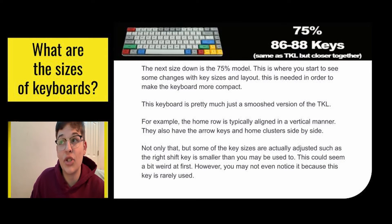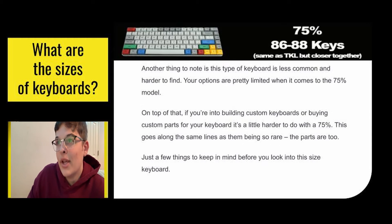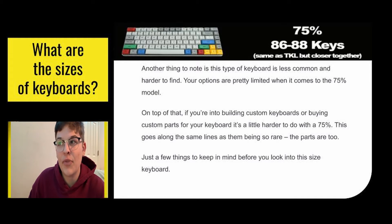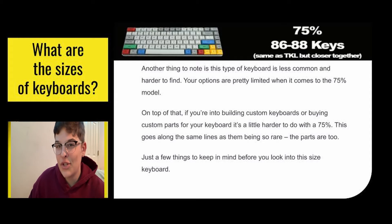Next is the 75%. This is when there are some changes with the key sizes and layout, needed to make the keyboard more compact — it's pretty much just a squished version of the TKL. For example, the home row is aligned in a vertical manner, and they also have the arrow keys and home clusters side by side. Some key sizes are actually adjusted, such as the right shift key being smaller than you may be used to. You may not notice it though, since this key is rarely used — most people use their left shift key. This type of keyboard is less common and harder to find, and your options for custom parts are pretty limited as well. Just a few things to keep in mind before you look into this size keyboard.